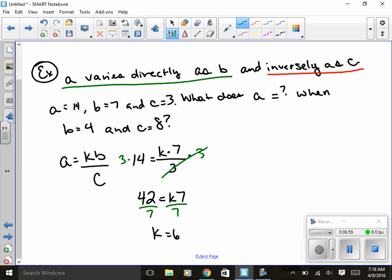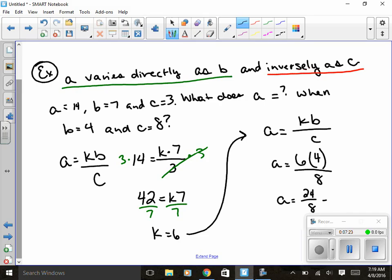So now that I've got what my K value is, I can go ahead and solve for A with the 4 and the 8. So I've got A equals, well, we've got 6 times 4 divided by 8. So I've got really 24 over 8, which equals 3. So this is the last section talking about variation because it's a combination of direct variation as well as a combination with inverse variation.